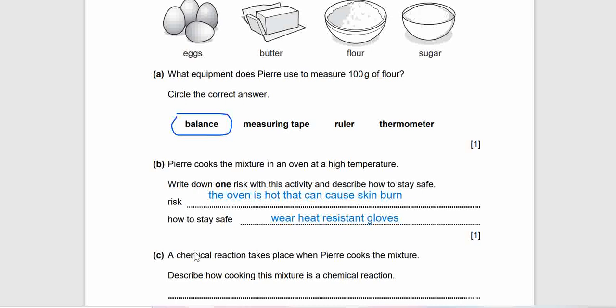Question 9C. A chemical reaction takes place when Pierre cooks the mixture. Describe how cooking this mixture is a chemical reaction. Get your answer ready. So it forms or it creates or it makes a new substance that is cake, which is irreversible. You cannot reverse back the cooked cake back into the raw egg and other raw material.